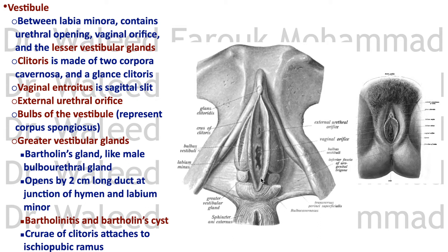The vaginal introitus is a sagittal slit. This is part of the natural protection for females because the outer opening is a vertical slit while the vaginal walls are horizontal anterior and posterior walls, bringing the opening to a minimum to protect against organisms from the outside.